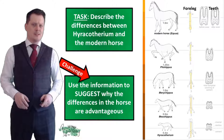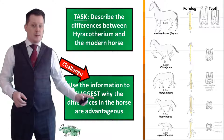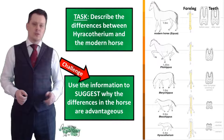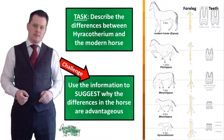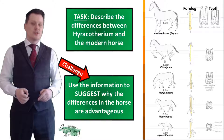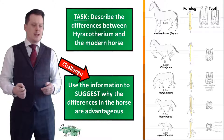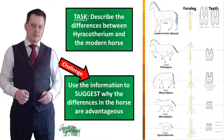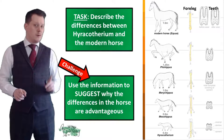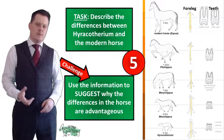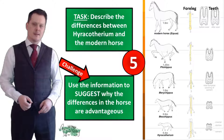I'd like you to describe the differences between Hyracotherium at the bottom of this fossil chart and the modern horse at the top. For a challenge, you can also suggest why these differences are more advantageous in the modern horse. I'm going to put five seconds on the clock — pause if you need more time, and when you're finished we'll go through the answers together.